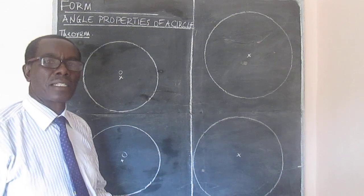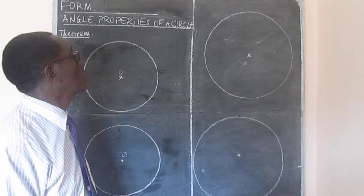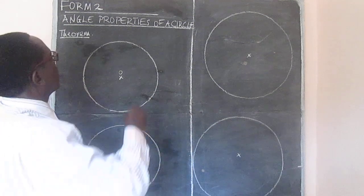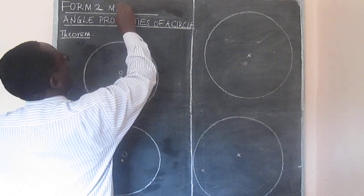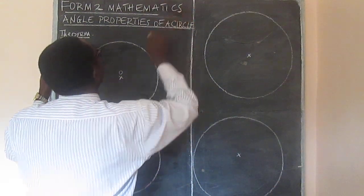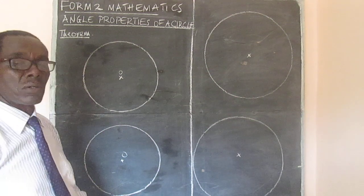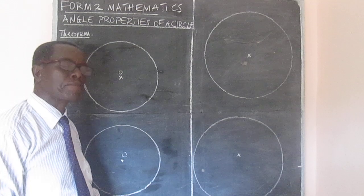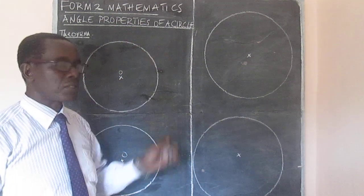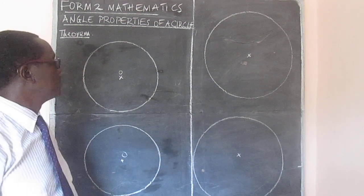Welcome to this mathematics class. This is going to be a class for Form 2 mathematics. In this particular lesson, we are moving on from our first video where we looked at the first theorem concerning the angle properties of a circle. Today we want to look at another theorem.